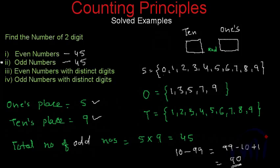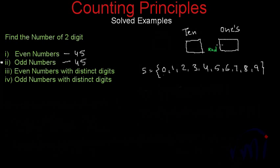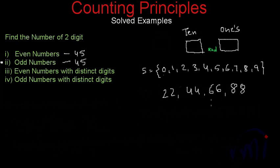Now we have to find the even numbers with distinct digits. The calculation becomes a little tricky. We have two places to fill, and the restriction is that the digits of the even numbers should be distinct. That means we can't have even numbers like 22, 44, 66, or 88. These are the only four even numbers where the digits are repeated. So total even numbers with distinct digits will be 45 minus 4, that is 41.